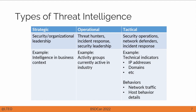There are three types of threat intelligence: strategic, operational, and tactical. Strategic threat intelligence is used to guide business direction — it's high-level intelligence used to figure out what to do with a business. Operational threat intelligence is used for things like figuring out which activity groups are currently active in an industry. And finally, tactical threat intelligence involves technical indicators such as IP addresses and domains used by threat actors, as well as behaviors like network traffic and host behaviors.